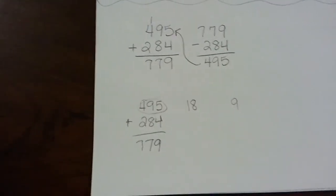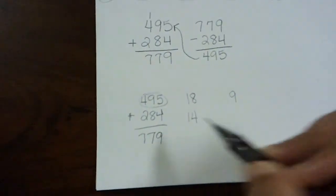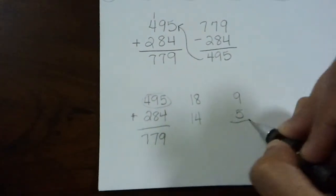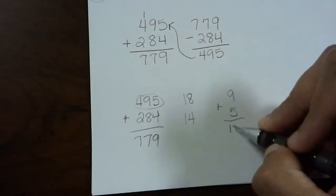284. 8 plus 2 equals 10. 10 plus 4 equals 14. 4 plus 1 equals 5. Now add those together. You get 14.